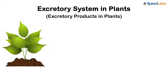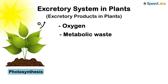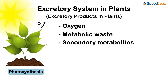We know that the process of photosynthesis results in the release of oxygen, which is of no use to the plant. So oxygen becomes one of the waste products. Similarly, the waste products generated out of metabolism need to be expelled. Also, even the various secondary metabolites can be included in this list. So let's have a look at how these wastes are expelled out from the plant body.